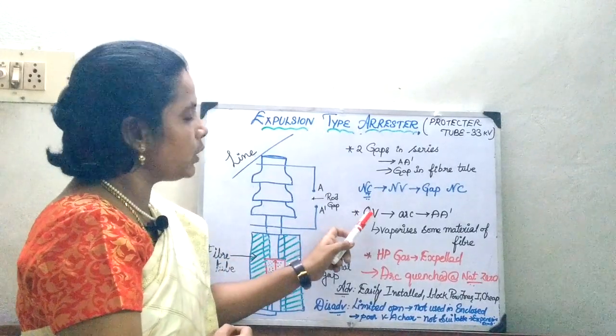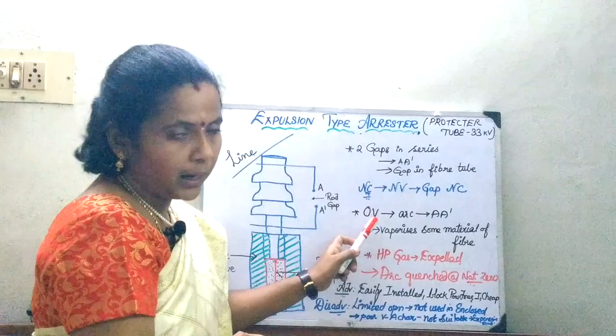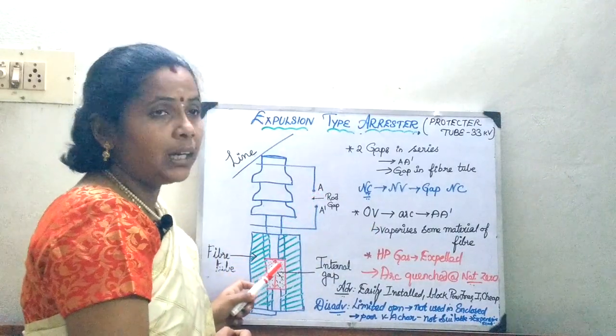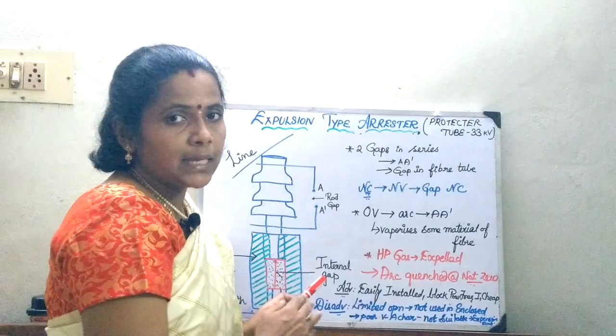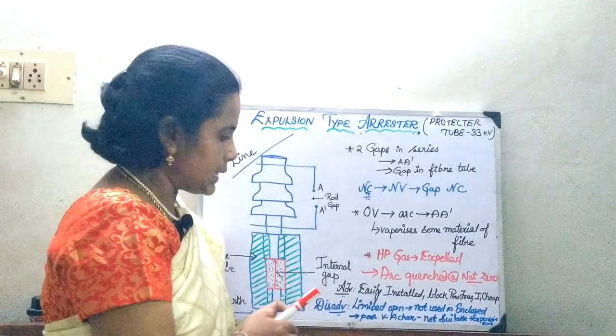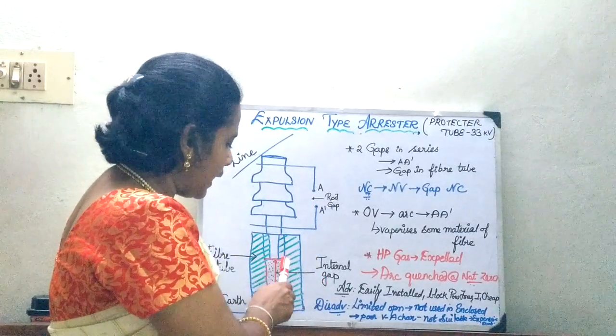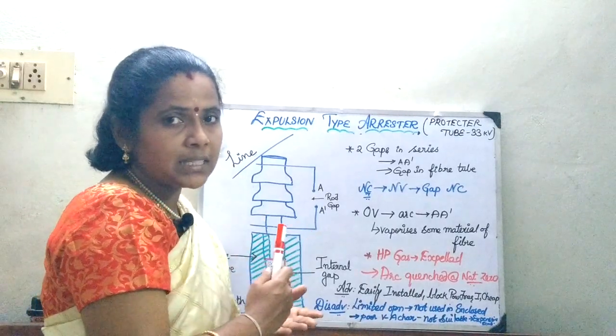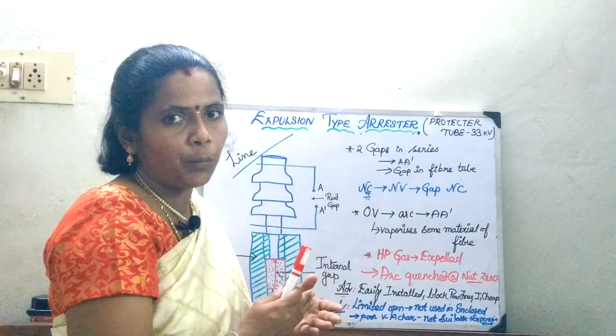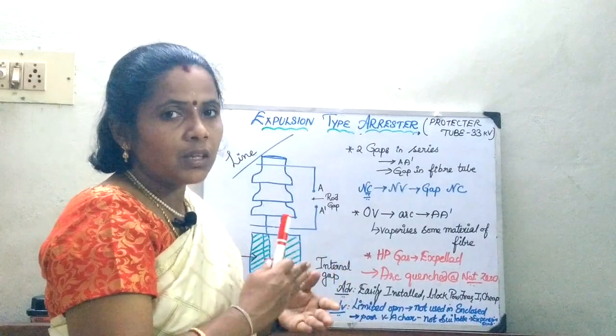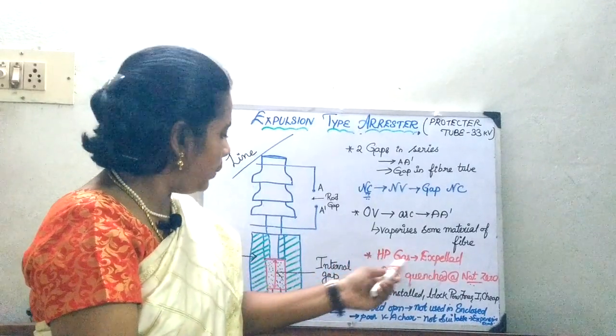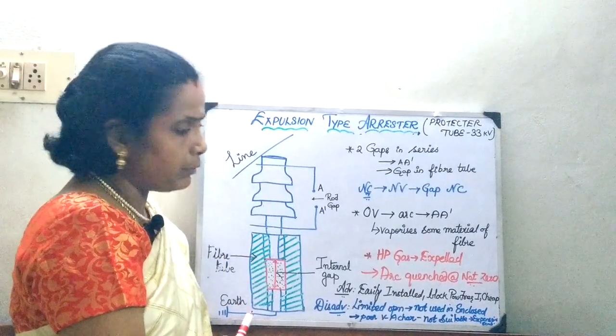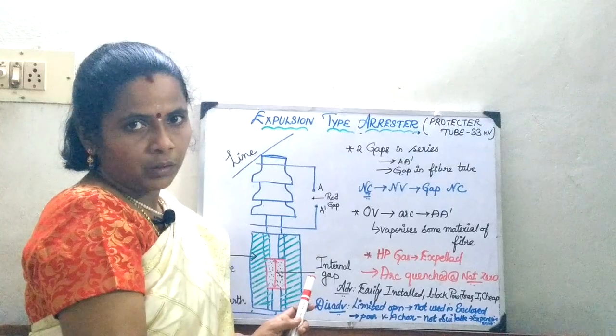What happens whenever the over voltage is going to penetrate - after the series arcing of this path, here also it is going to start arcing. So, in that case, it will vaporize some of the gases inside the layers of your fiber material. As a result, after some time, there is going to be a high buildup of pressure. So, this high pressure gas will be expelled outside through the hollow part of the lower electrode.